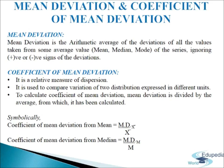Mean deviation is the arithmetic average of the deviations of all the values taken from some average value — mean, median, or mode — of the series, ignoring positive or negative signs of the deviations. Mean deviation is also known as the first moment of dispersion. Mean deviation is based on all the items of the series. Theoretically, mean deviation can be calculated by taking deviations from any of the three averages, but in actual practice, mean deviation is calculated either from mean or from median.